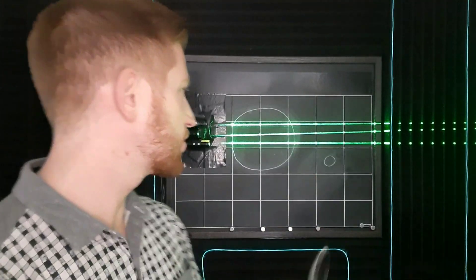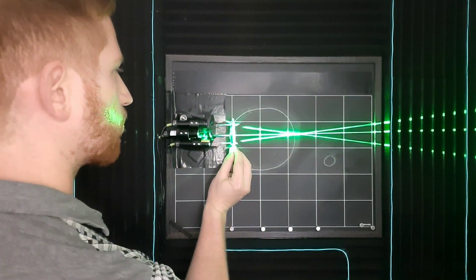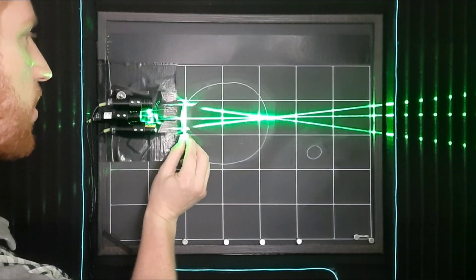But what do near and far-sightedness mean? Laser demo to the rescue. So, as I showed before, in proper vision, the light is focused onto the retina.